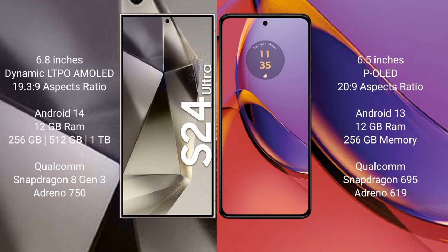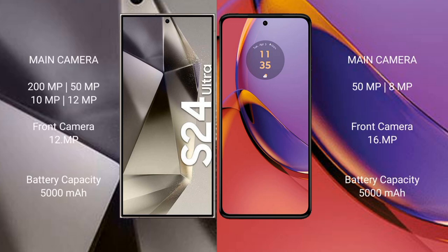Samsung Galaxy S24 Ultra features a Qualcomm Snapdragon 8 Gen 3 processor and Adreno 750 GPU. Motorola Moto G84 comes with 8GB or 12GB RAM and 256GB internal storage, Qualcomm Snapdragon 695 processor and Adreno 619 GPU. Samsung Galaxy S24 Ultra has a quad rear camera setup: 200MP, 50MP, 12MP, and 10MP, with a 12MP front camera.